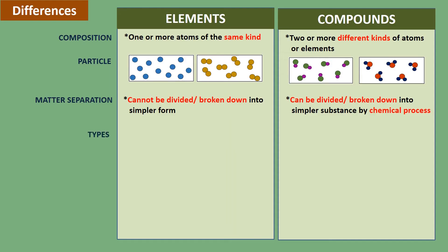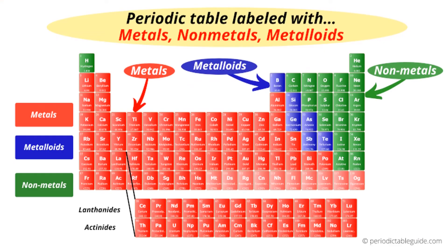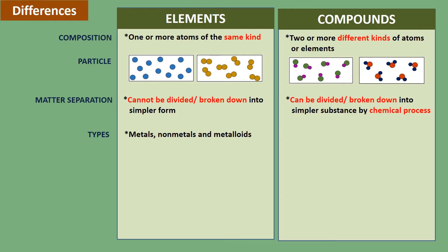Types: the types of elements are metals, nonmetals, and metalloids. In the periodic table of elements, the elements in red color are metals, in green color are nonmetals, and in blue color are metalloids. The types of compounds, on the other hand, are acids, bases, and salts.